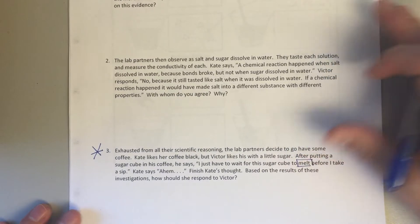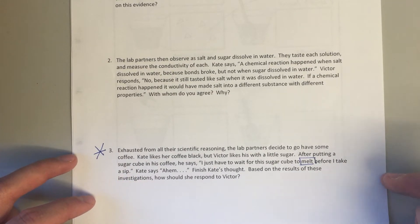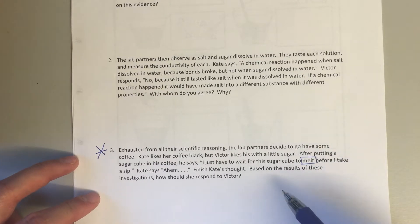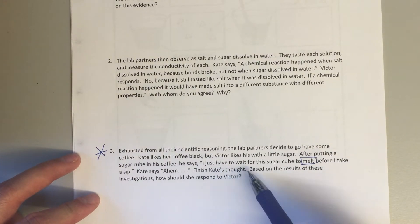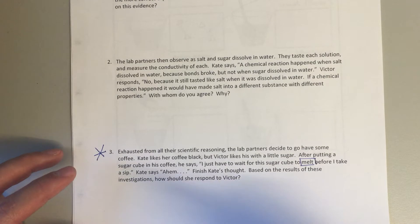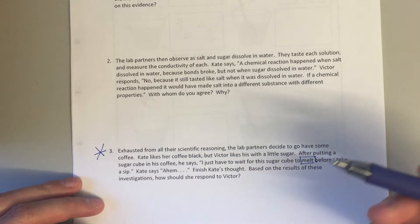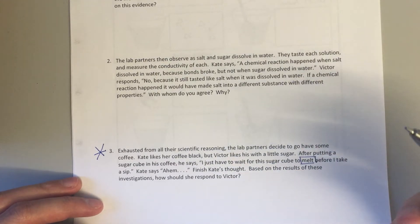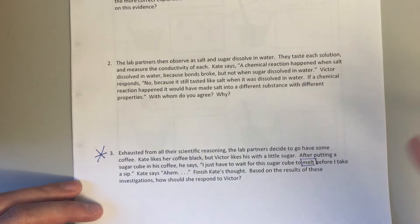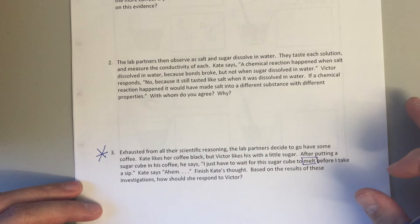So the third one, I did put a star next to this one, so this one might be a little bit more important, so definitely make sure you spend some time on this one. Here we've got again another conversation, but Victor says 'I just have to wait for the sugar cube to melt'—and you'll notice that I put a box around the word 'melt'—before I take a sip. Then Kate is going to sort of correct him or say something to him, and what we're asking you guys to do is put yourself in Kate's position and say, 'Actually Victor, this is really the way you should be thinking about it,' or 'This is really the way that I think about it'—sort of be contrarian.